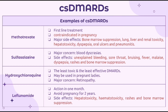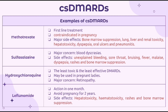Here are four examples of csDMARDs. First is methotrexate, which is the first-line treatment for rheumatoid arthritis. However, it is contraindicated in pregnancy and should be stopped three months before conception. Major side effects include bone marrow suppression, lung and renal toxicity, hepatotoxicity, dyspepsia, oral ulcers, and pneumonitis. Folic acid can be given to prevent these side effects.